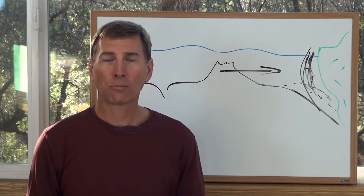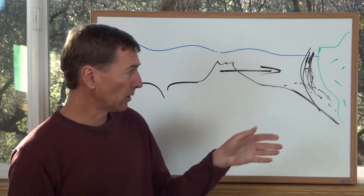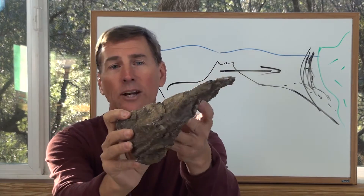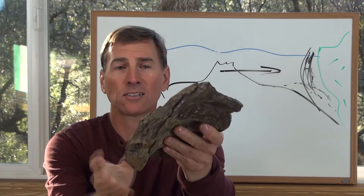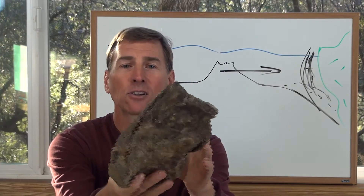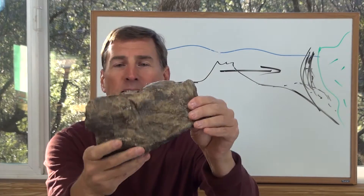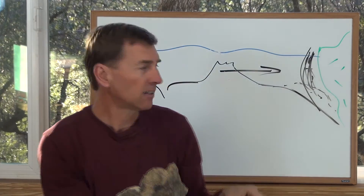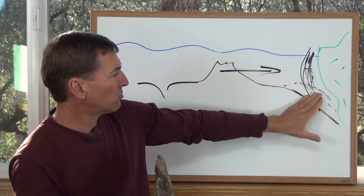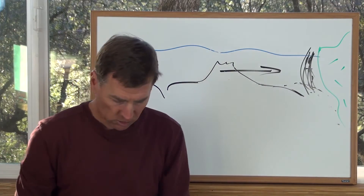I want to talk a little bit more about accreted terrains with the whiteboard. Here is a chunk of the coast range and you can see it's really been mangled up. The coast range is a bunch of sediments that have been added to the edge of the continent. These sediments are driven down into the oceanic trench.